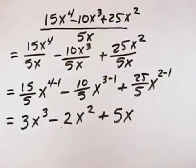We don't need to write a first power, we can just leave it as 5x to get 3x cubed minus 2x squared plus 5x.